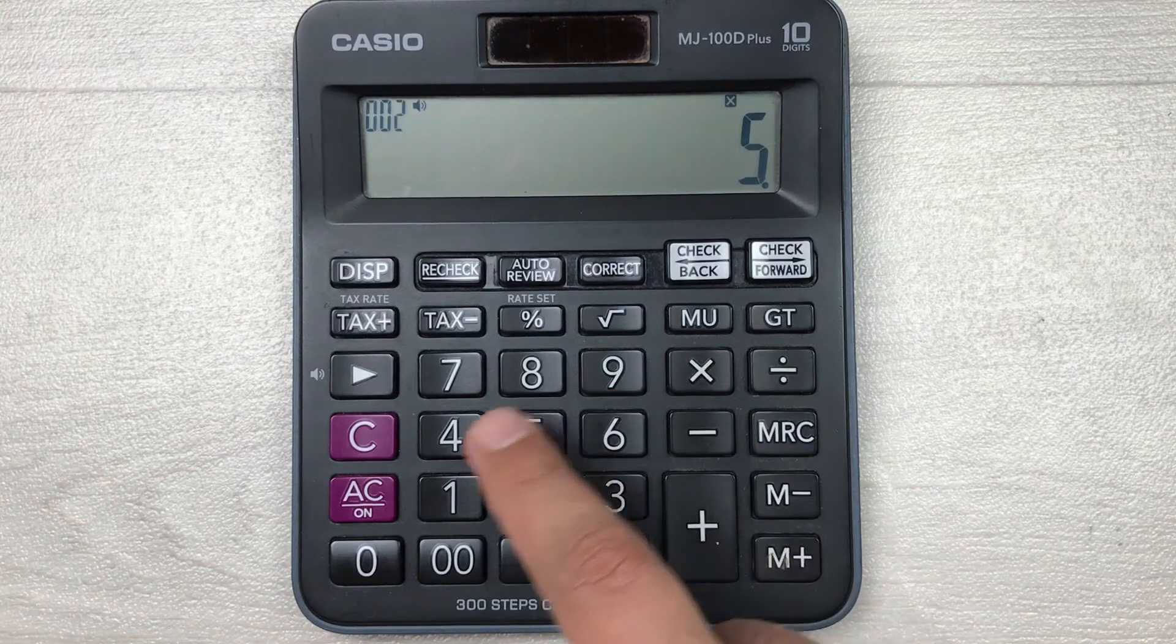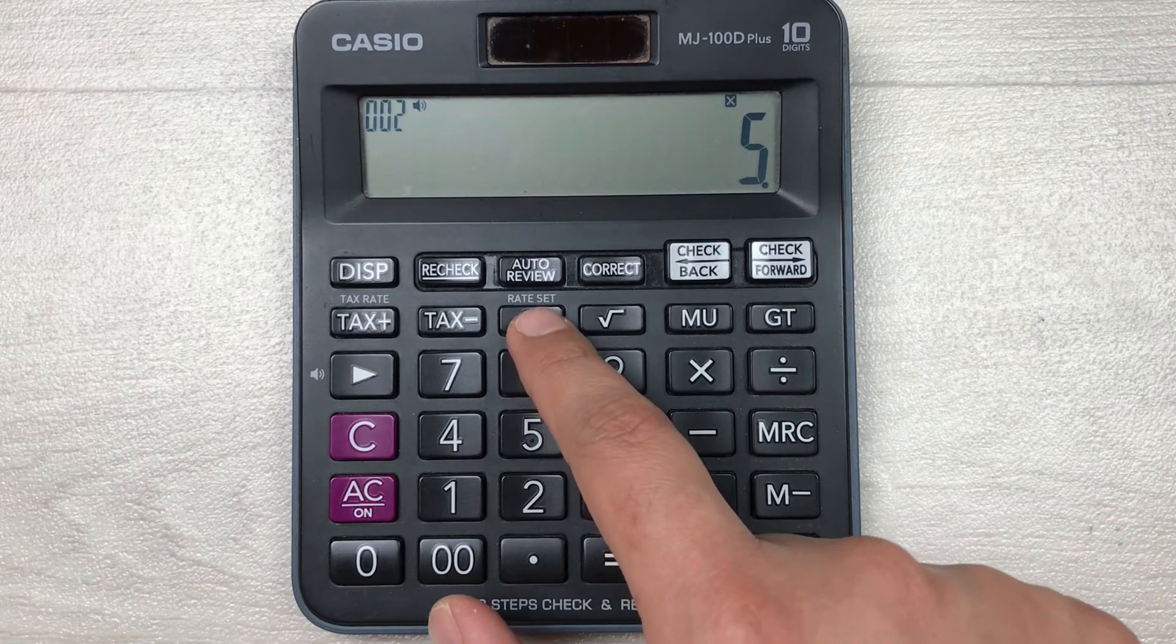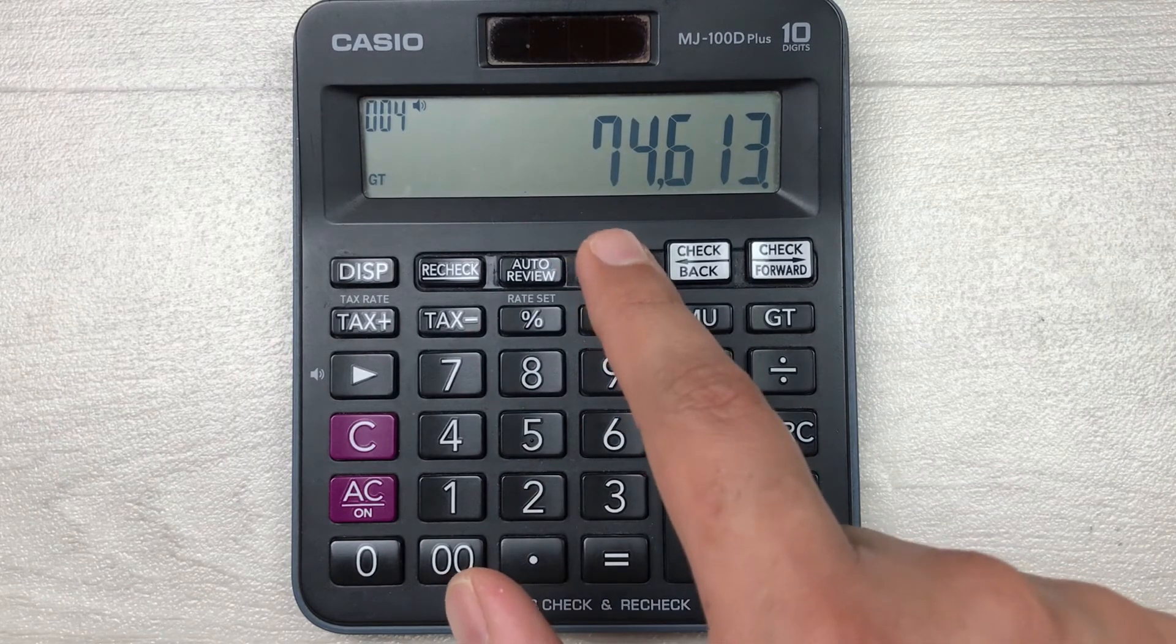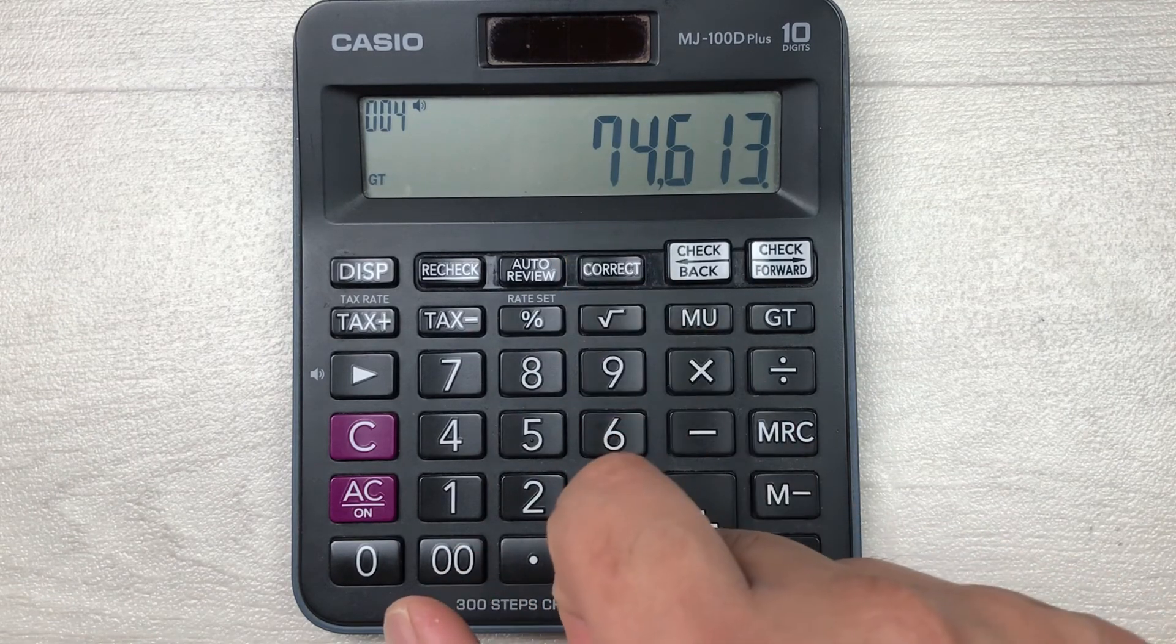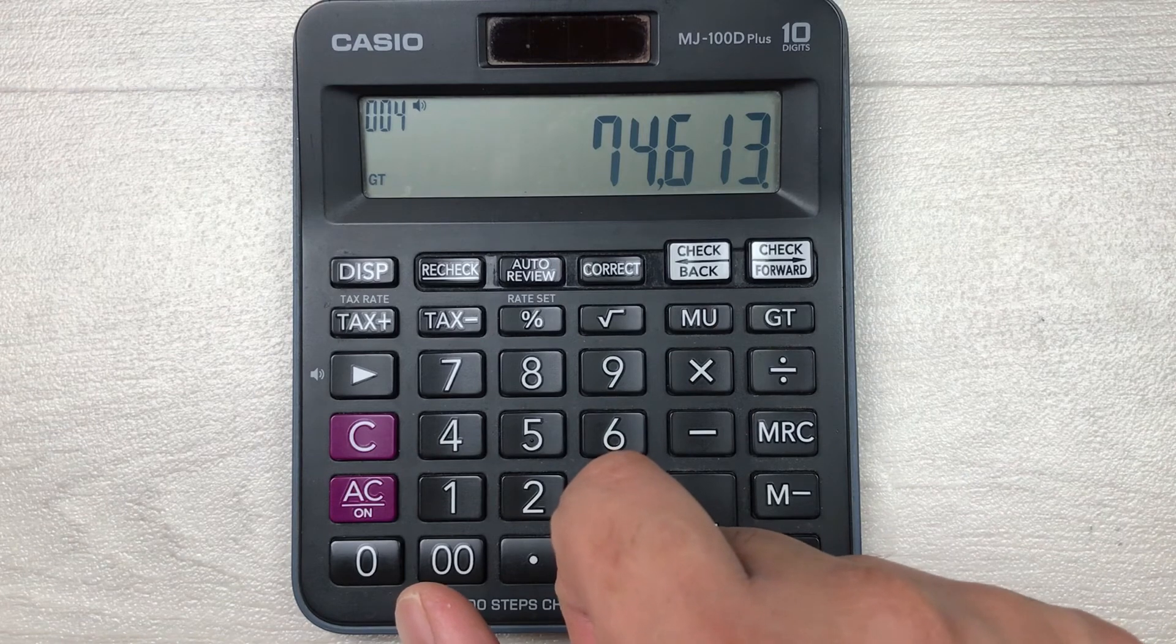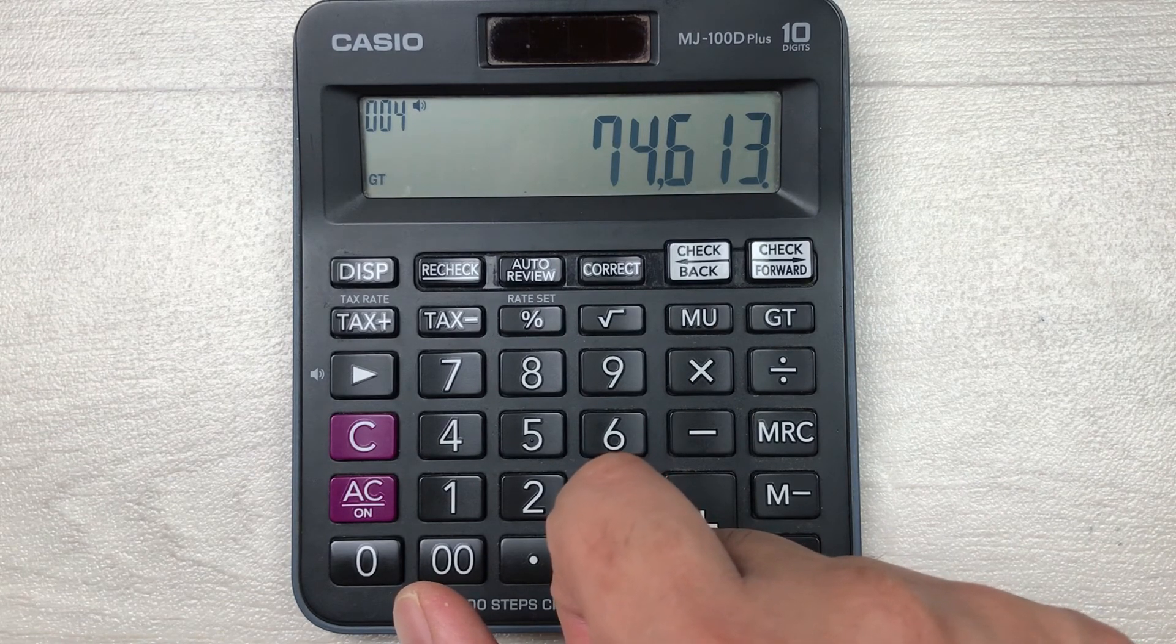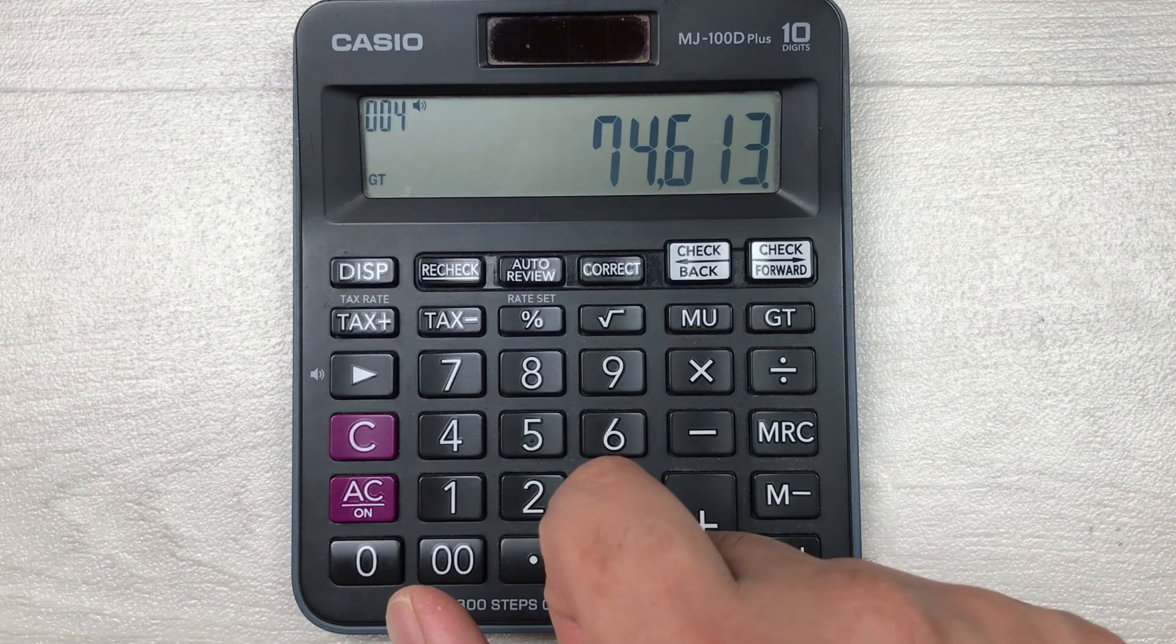So you multiply it with 5, then you press this percentage button, and then you press this minus button. So here is the final answer. 74,613 is the final price after 5% off.